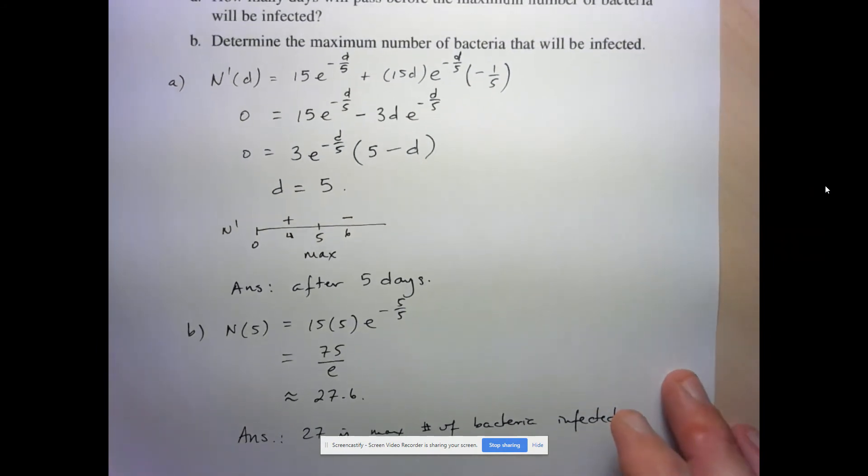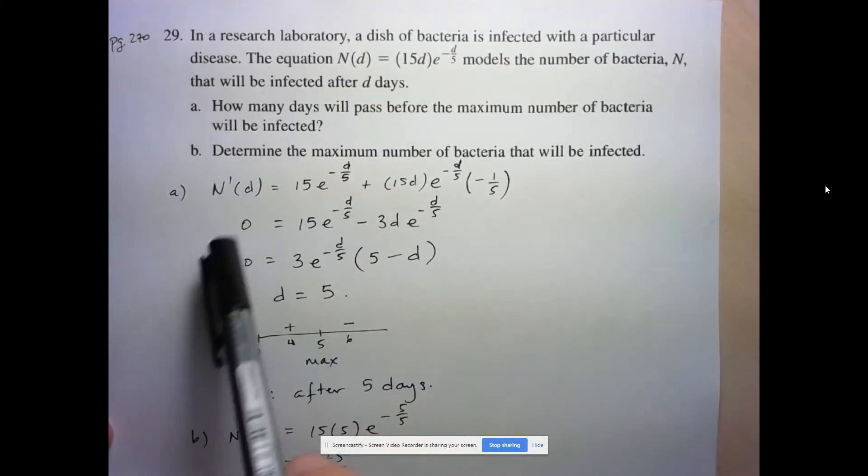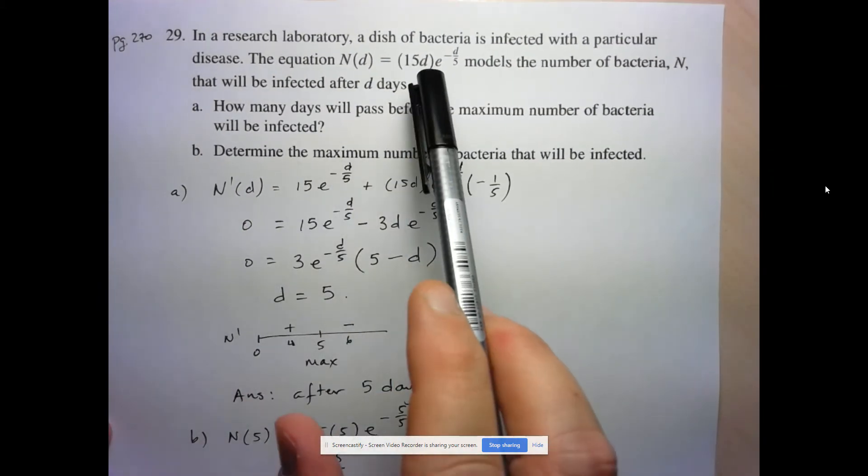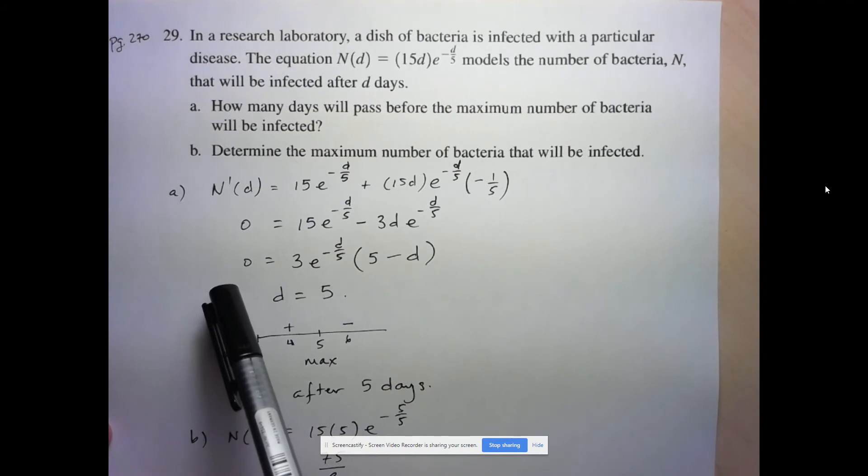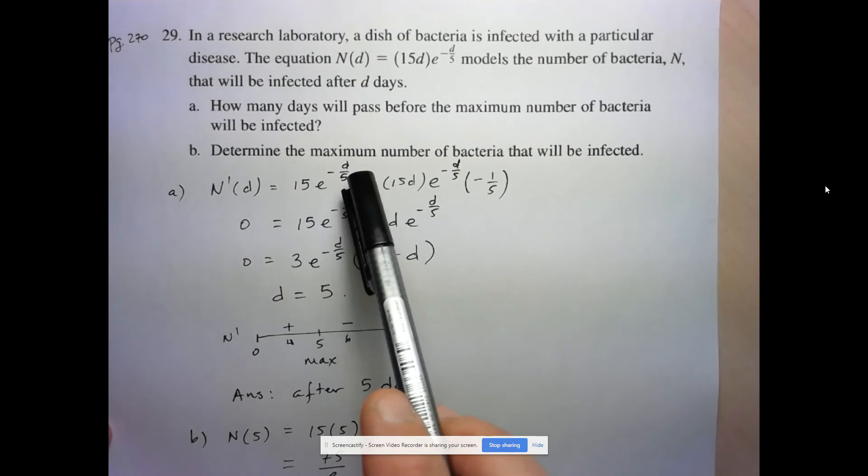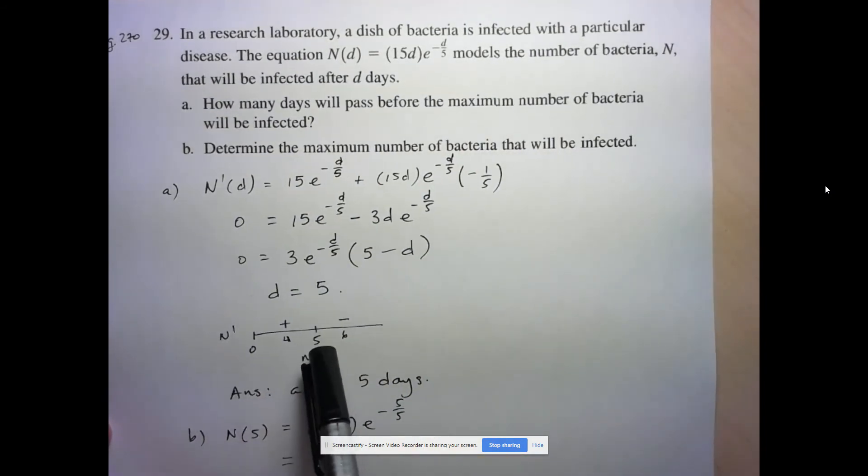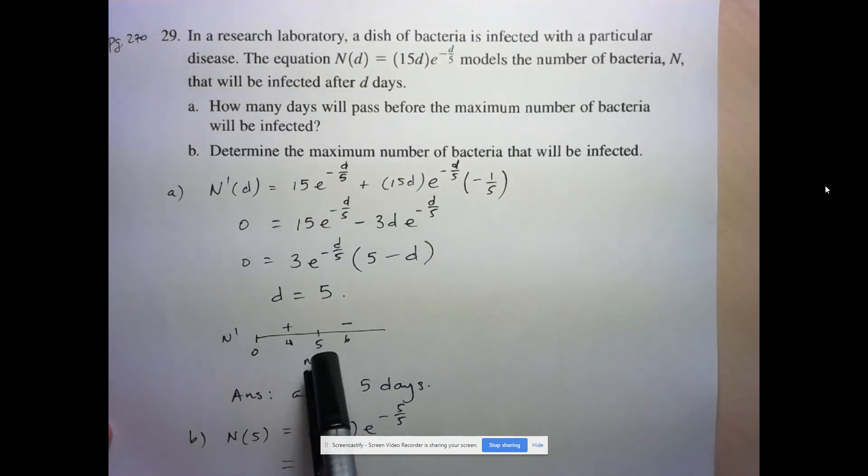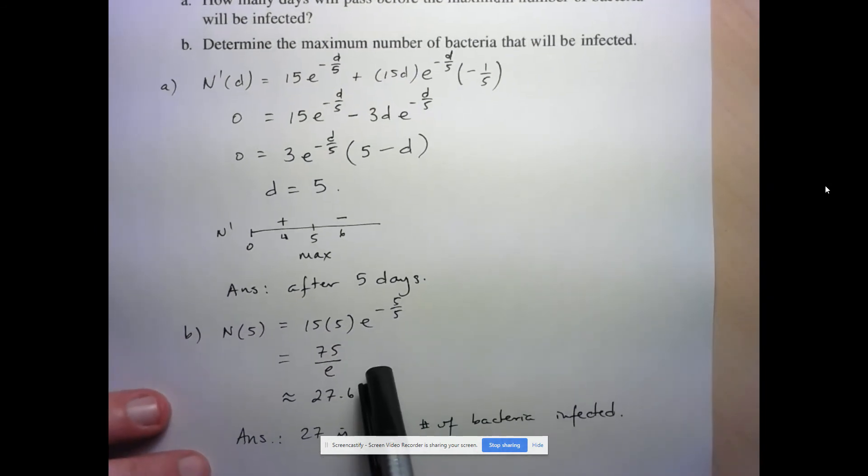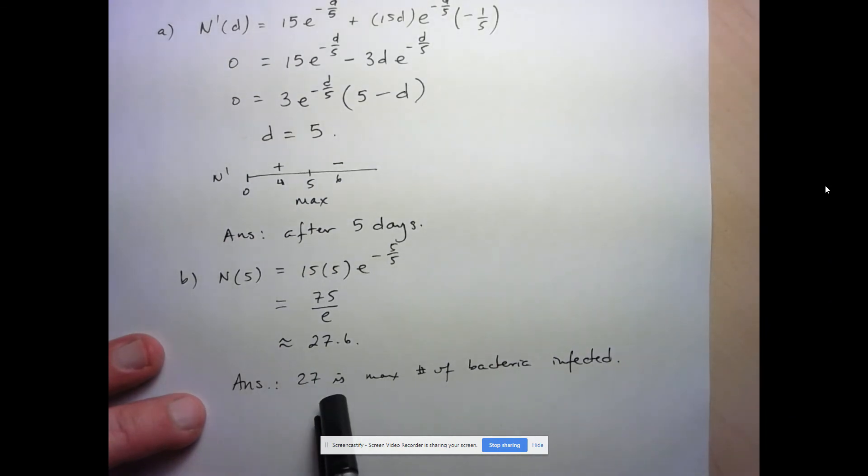So let's just do a recap here. Step number one was to realize that despite the context and the function that we were given, it was just an optimization question on this function. So we had to find the derivative, determine when it's equal to zero. We found our critical point. We established that it was indeed an absolute maximum on the domain we were interested in, since we're only interested in d greater than zero. And then from there, we were able to input it into the function to determine the maximum value.